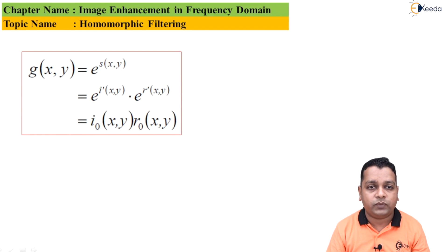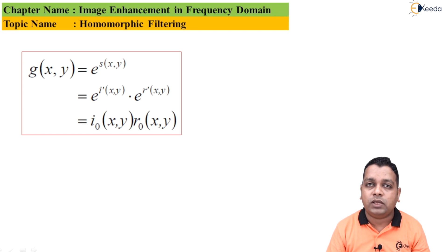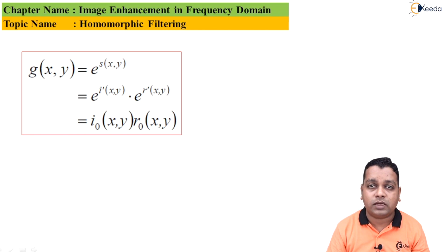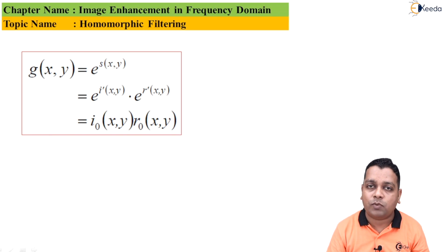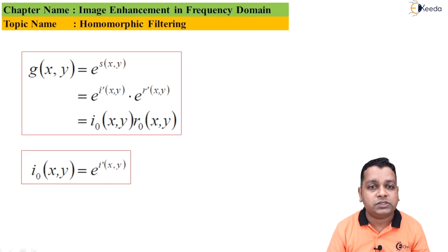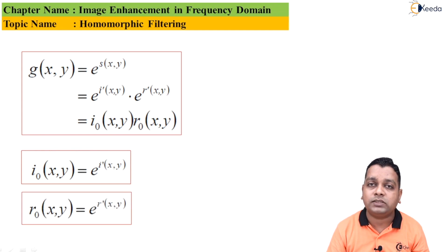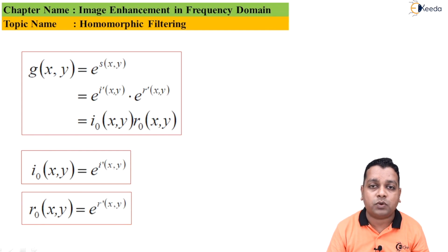The output image g(x, y) is obtained by taking the exponential of the intermediate image s(x, y). This gives g(x, y) = e^[i'(x,y)] · e^[r'(x,y)], which can also be denoted as i₀(x, y) · r₀(x, y), where i₀(x, y) = e^[i'(x,y)] and r₀(x, y) = e^[r'(x,y)].